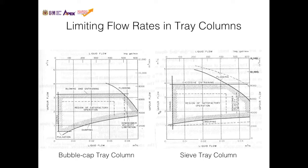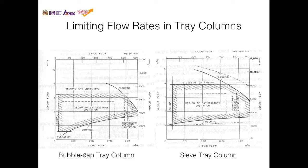The operation of a tray column is a balancing act of controlling the vapor flow and the liquid flow. These two diagrams show the relationship between vapor flow rate and liquid flow rate for the bubble cap tray absorption column and for the sieve tray absorption column.